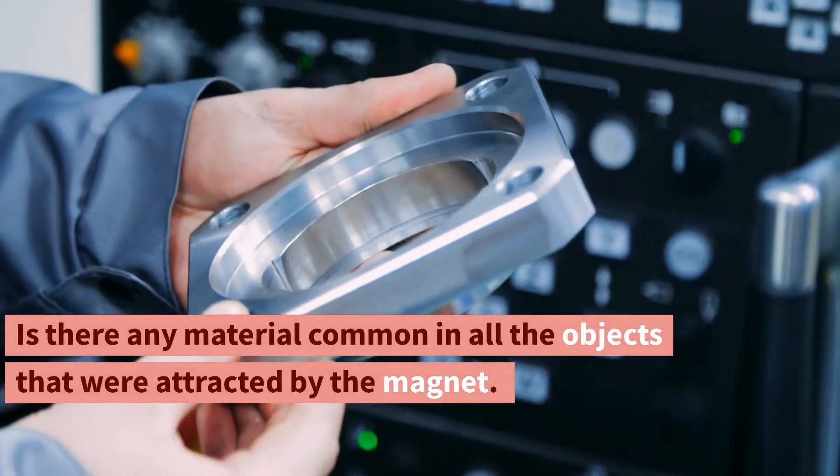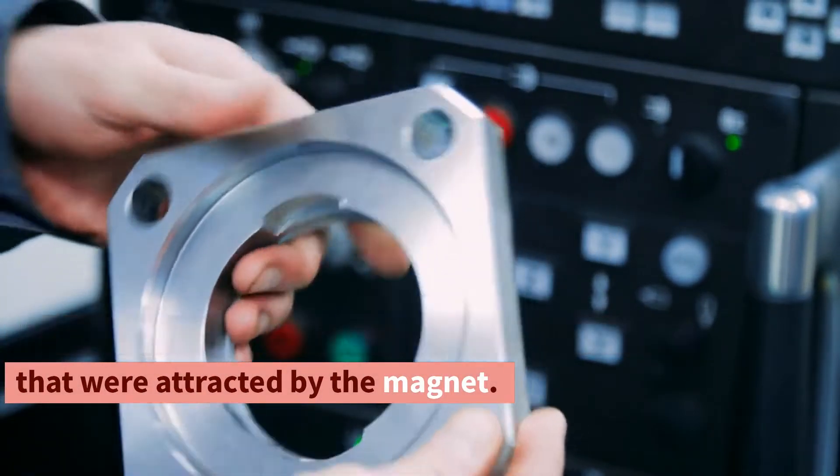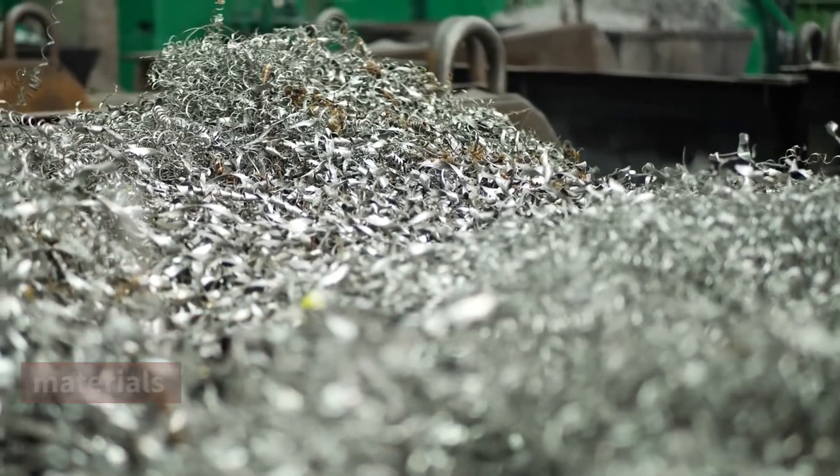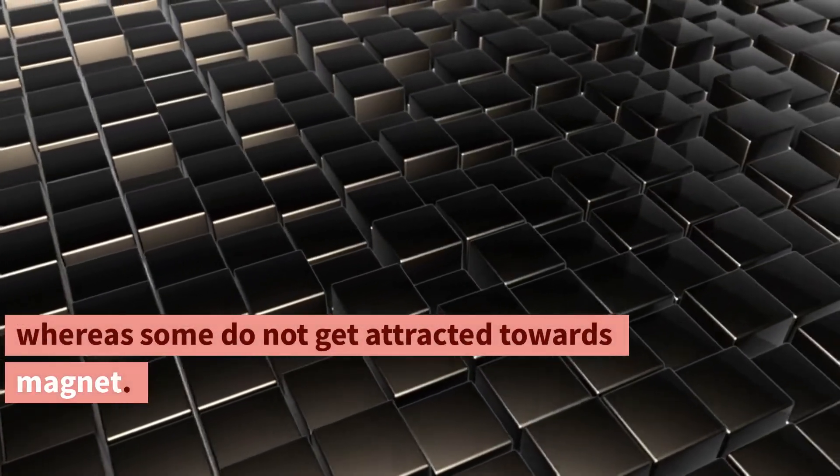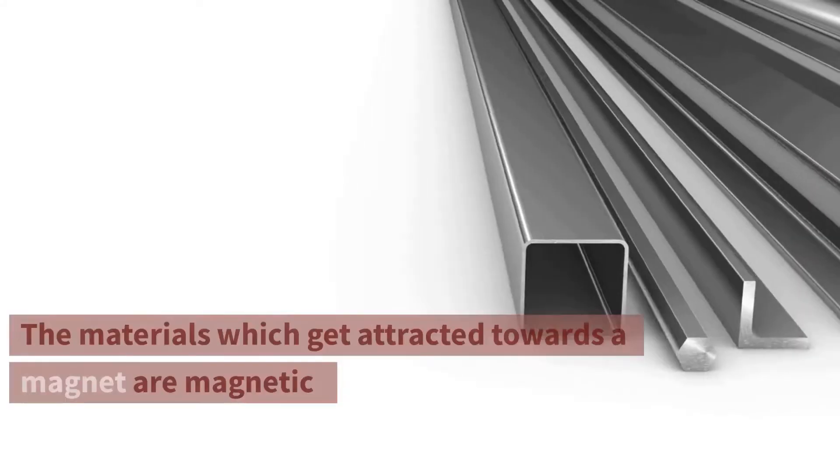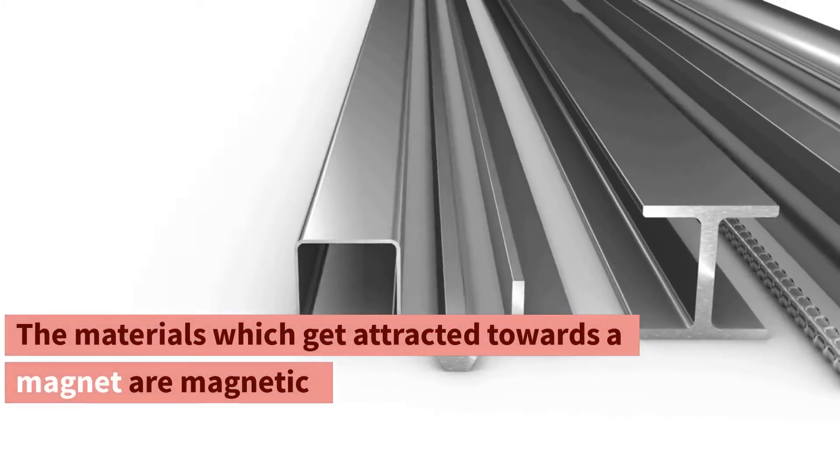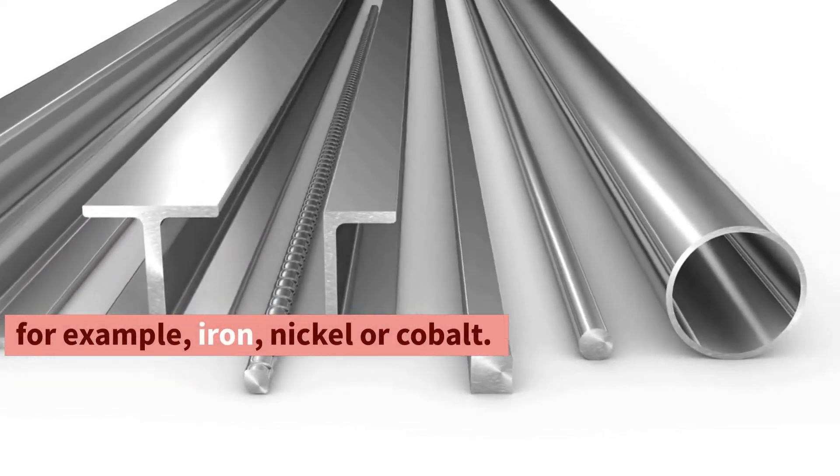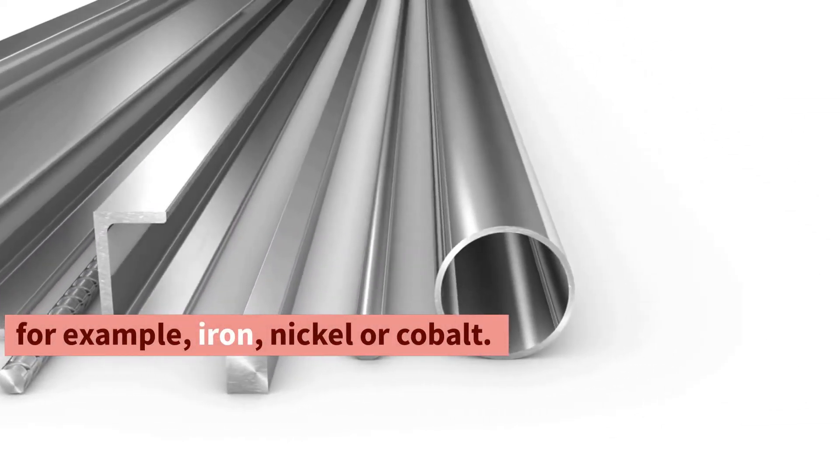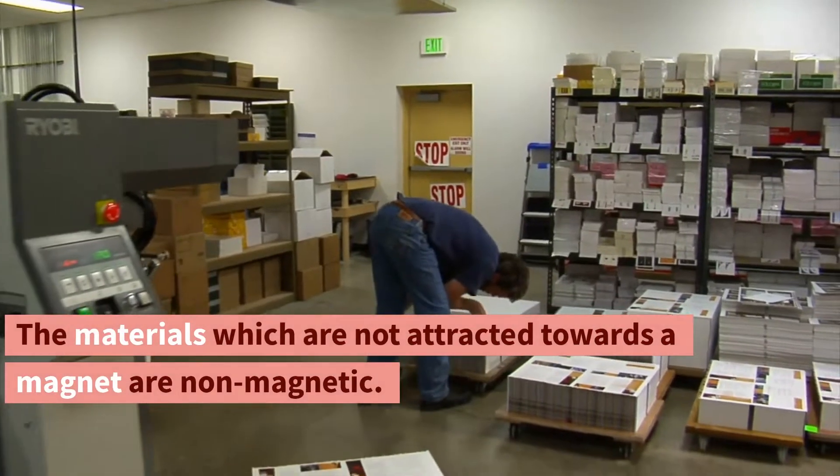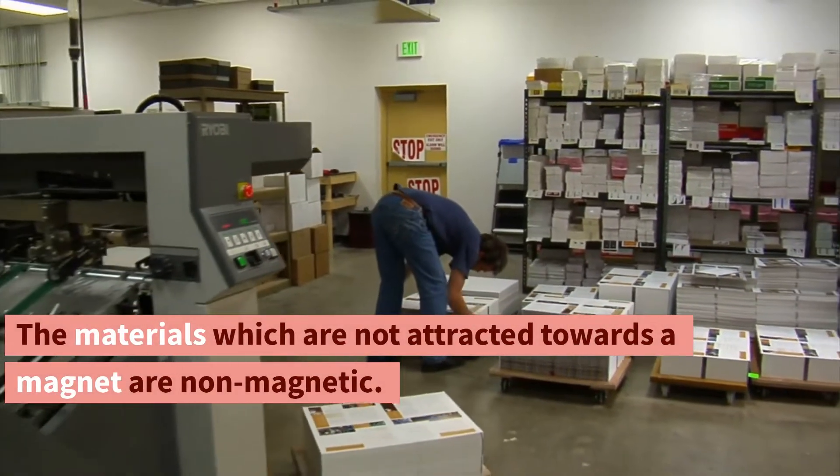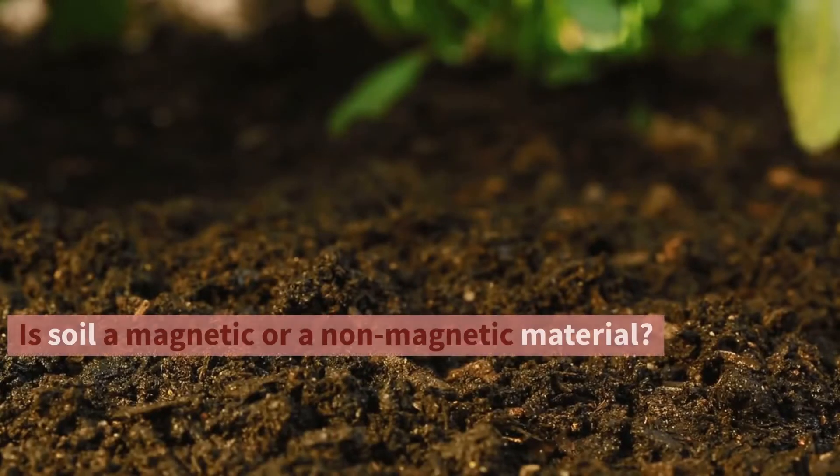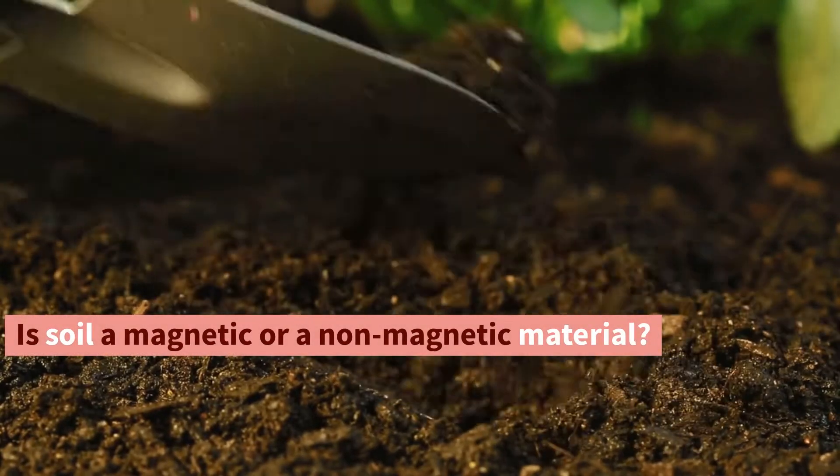Is there any material common in all the objects that were attracted by the magnet? We understand that magnet attracts certain materials, whereas some do not get attracted towards magnet. The materials which get attracted towards a magnet are magnetic, for example, iron, nickel or cobalt. The materials which are not attracted towards a magnet are non-magnetic. What materials did you find to be non-magnetic? Is soil a magnetic or a non-magnetic material?